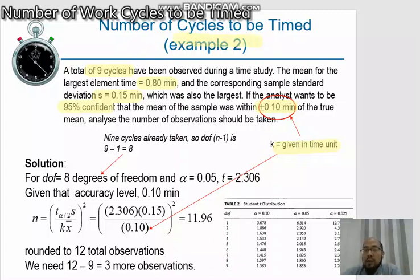Back to this formula. Again, we have to find out all these four parameters to determine the N value, the number of cycles to be timed in this example. S is already given as 0.15. This is a tricky part here because the K is now given in minutes. For the t value, we can take from this table, same as the example, with the degree of freedom now 8 and alpha divided by 2 still 0.025. Refer to this t table, we get 2.306.